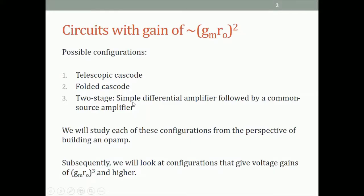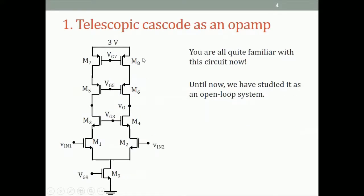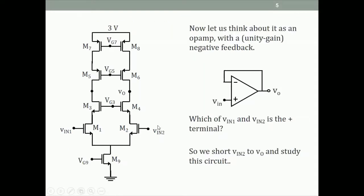Let us begin with the telescopic cascode differential amplifier. This is a circuit we are quite familiar with from assignment three. We are now thinking about this circuit as an op-amp. We'll look at what happens when we apply negative feedback — specifically, a unity gain negative feedback, connecting a wire from the output back to the input.